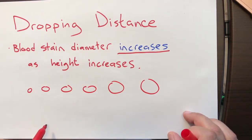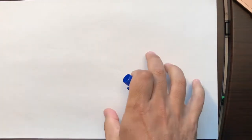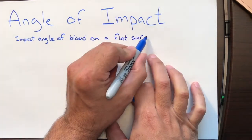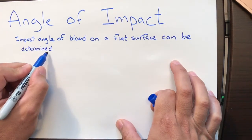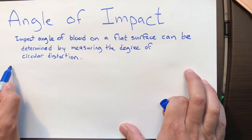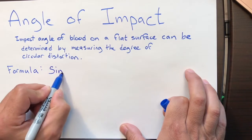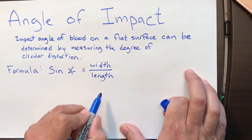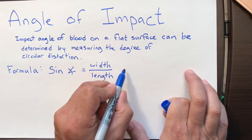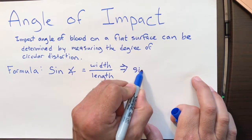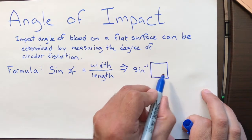What about the angle of impact? The impact angle of blood on a flat surface can be determined by measuring the degree of circular distortion. The formula to commit to memory is: the sine of the angle equals width divided by the length of the blood droplet. Since we want the angle itself, we take the inverse sine of (width divided by length) to get the angle.